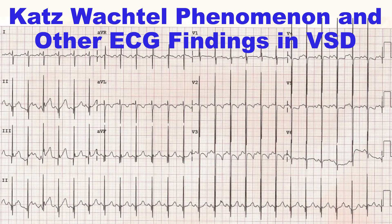The Katz-Wachtel Phenomenon consists of tall diphasic RS complexes at least 50 mm in height in leads V2, V3, or V4 — the mid-precordial leads. The QRS amplitude is high and often overshoots the margin of the ECG graph, as seen in lead V4 in this case. It may be necessary to take the ECG in half standardization, i.e., 5 mm per mV instead of 10 mm per mV, to capture the full QRS complex without overlapping with other leads.